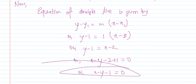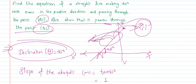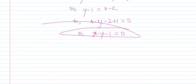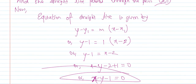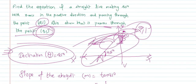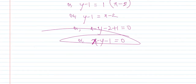So the required equation of this straight line is x - y - 1 = 0. This is the equation of the line. Now, also, we need to check that it passes through the point (0, 1). We want to verify whether the line also passes through (0, 1).